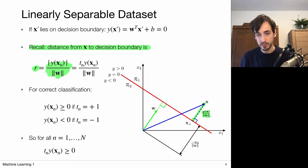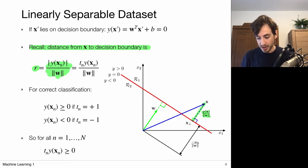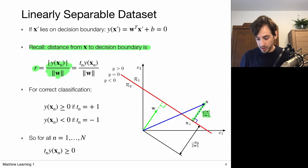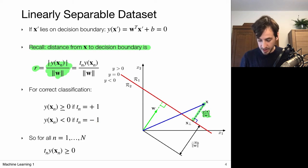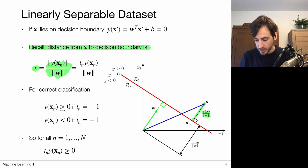Since the dataset is linearly separable, we can find a model that correctly assigns a positive value for each data point belonging to the positive class and a negative value for the negative class. This means the model satisfies the constraint that for each target t_n, the product t_n · y_n is positive. So in the linearly separable case, instead of writing the absolute value, we can simply use the product t_n · y_n.